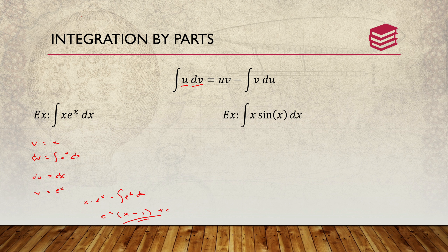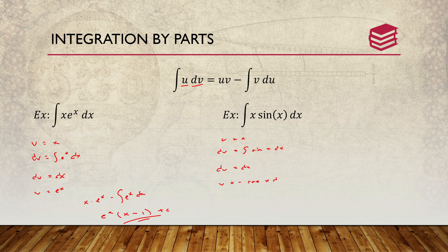Moving to the next example on the right, we have x and a trig identity — sine of x. So u is going to be simply x, and dv is going to be the integral of sin(x) dx. Then du is just dx, and v — the integral of sine — gives negative cosine of x.